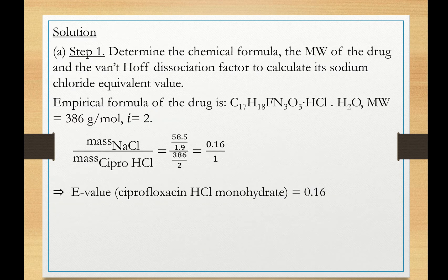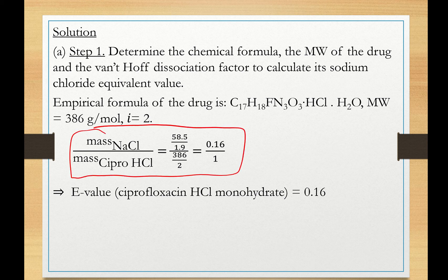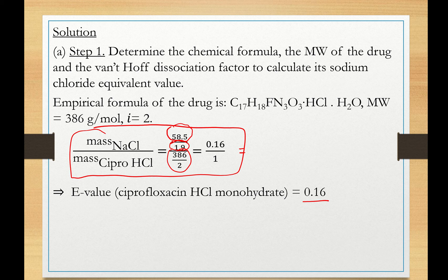Step 1 is to determine the E-value for ciprofloxacin hydrochloride. Using our equation — mass of NaCl over mass of cipro — with molecular weight of NaCl at 58.5 (I = 1.9) and molecular weight of cipro at 386 (I = 2), we end up with an E-value of 0.16. This means 0.16 grams of sodium chloride are osmotically equivalent to 1 gram of ciprofloxacin. This is a ratio: 0.16 g NaCl is osmotically equivalent to 1 g cipro.